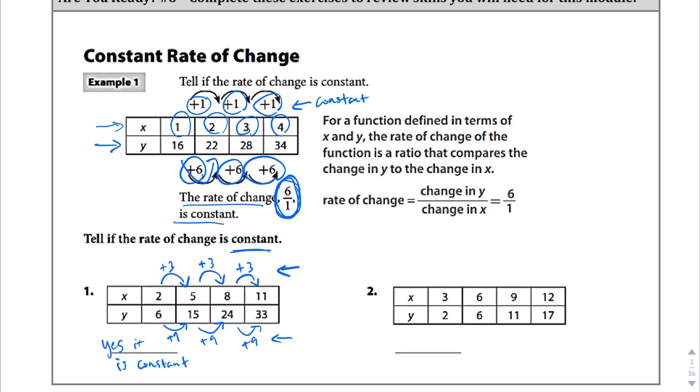So let's take a look at question number 2. From 3 to 6, we did a plus 3. From 6 to 9, plus 3. 9 to 12, plus 3. From 2 to 6, plus 4. 6 to 11, plus 5. Oh, that's interesting. 11 to 17, plus 6. So those are constant. But look at the y values here. It went up by 4, 5, and 6. So this is no, not constant.